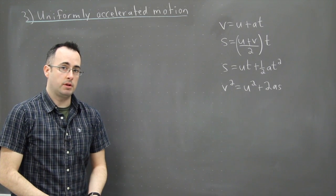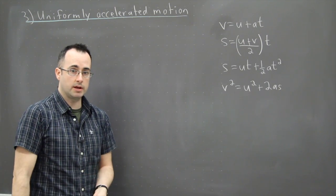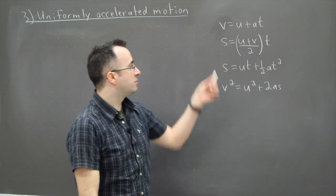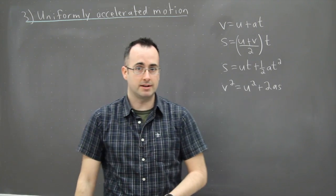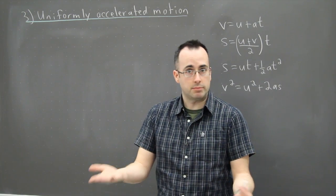So here we're going to look at an example of accelerated motion and see how we can use this trick of UVAST in order to solve something. I've just written out these four equations of motion because we might need them. In fact we're going to need one of them. So let's take a look at some example we could do.